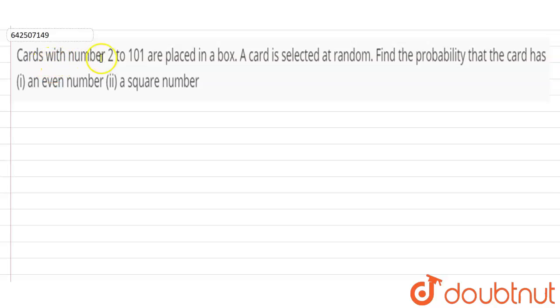So the question is cards with number 2 to 101 are placed in a box. A card is selected at random. Find the probability that the card has an even number and second the card has a square number. Now total number of outcomes from 2 to 101 is equals to 100. So n(s) is equals to 100.